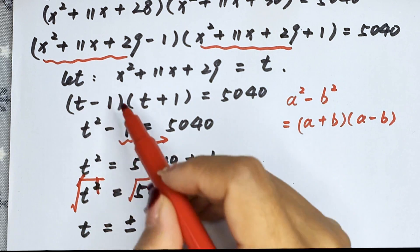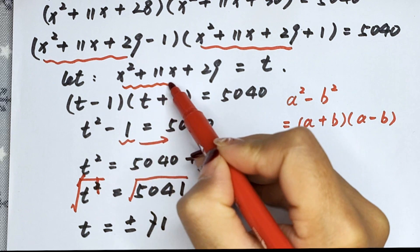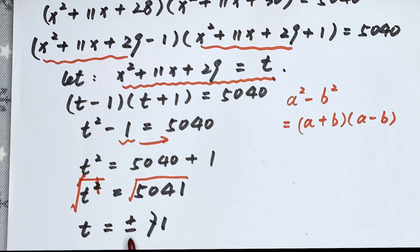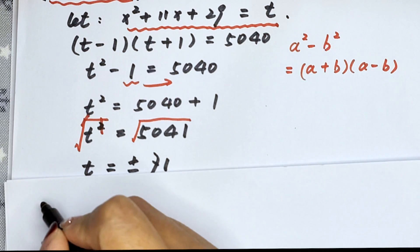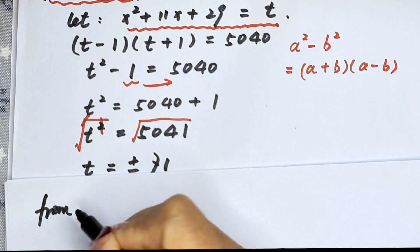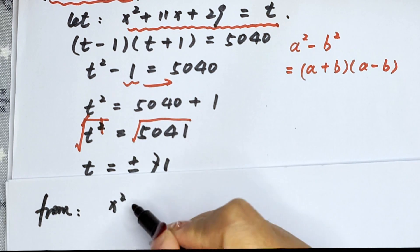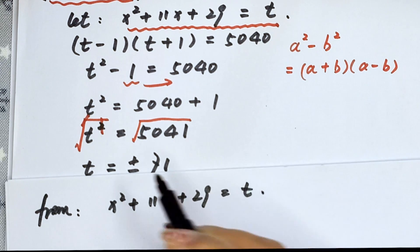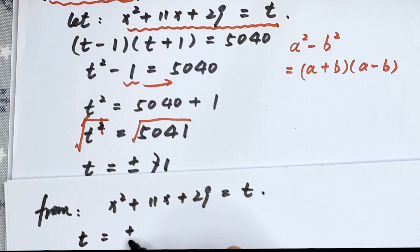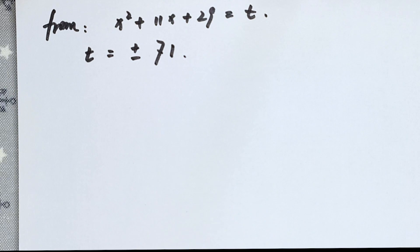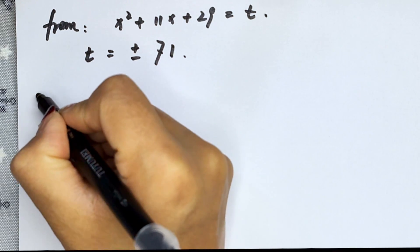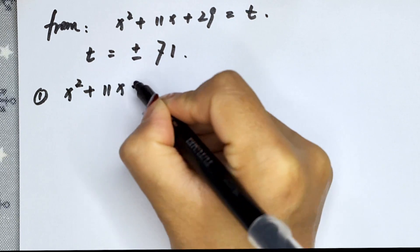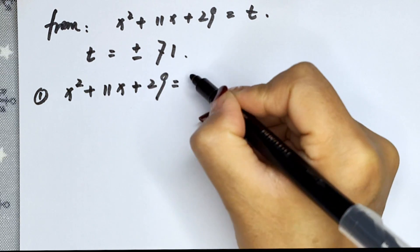Substituting back, since we let x squared plus 11x plus 28 equal t, and t equals plus or minus 71, we have two cases. Case one: x squared plus 11x plus 28 equals 71.